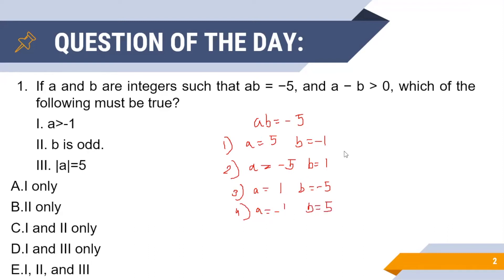Next we will check in which of these cases a minus b is also greater than zero. For case one, we see a minus b is five minus minus one, that is six, and hence a minus b is greater than zero. For case two, a minus b equals minus six, and hence it is less than zero.